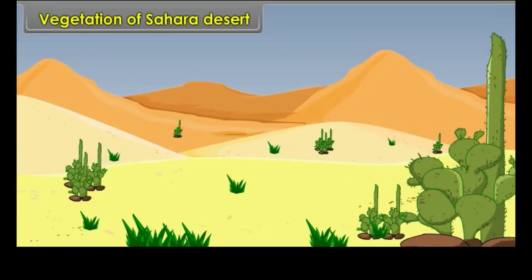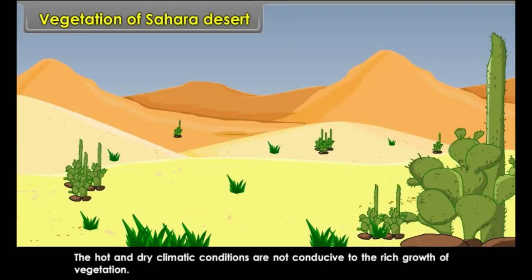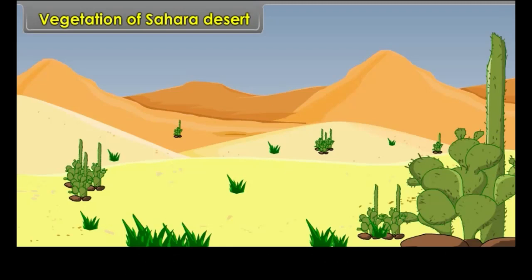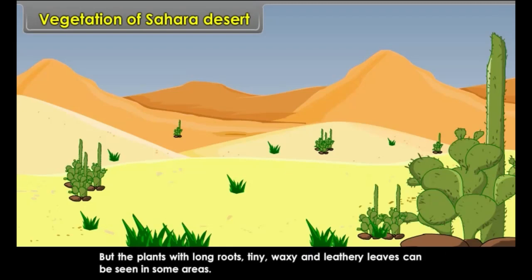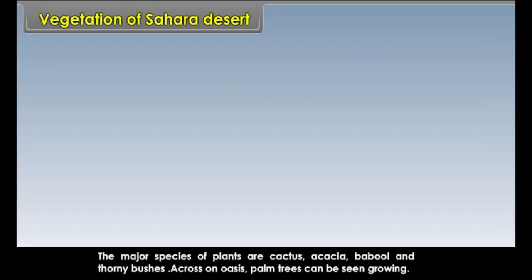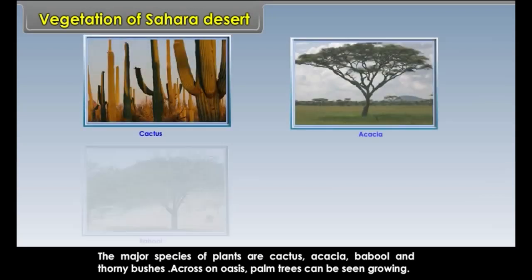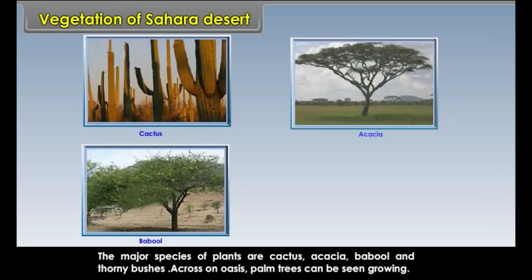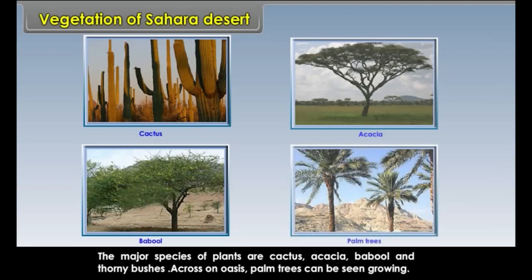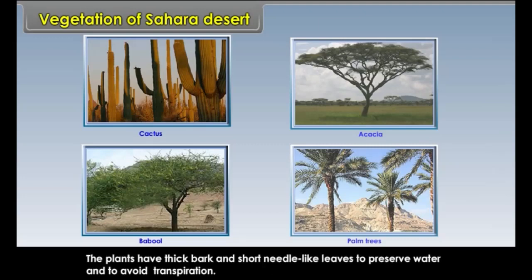Vegetation of Sahara Desert: The hot and dry climate conditions are not conducive to rich growth of vegetation. But plants with long roots, tiny, waxy and leathery leaves can be seen in some areas. The major species of plants are cactus, acacia, babool and thorny bushes. Across an oasis, palm trees can be seen growing. The plants have thick bark and short needle-like leaves to preserve water and to avoid transpiration.